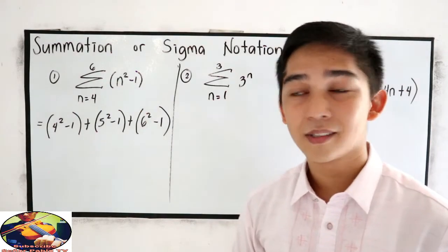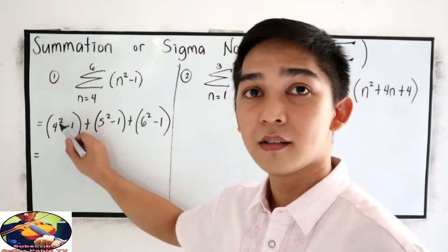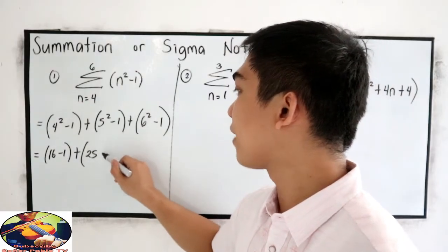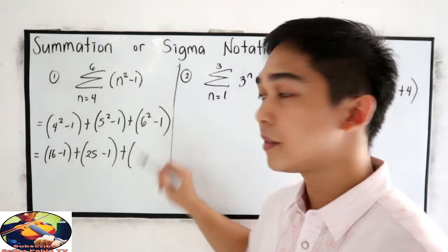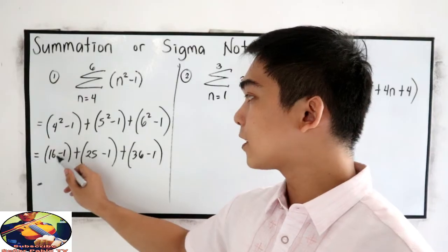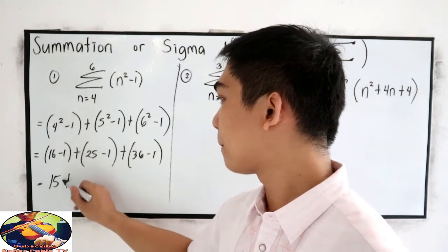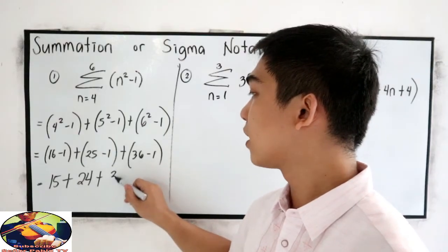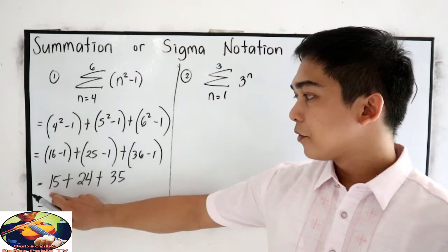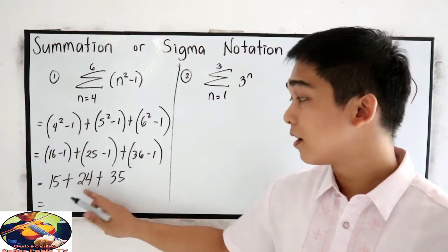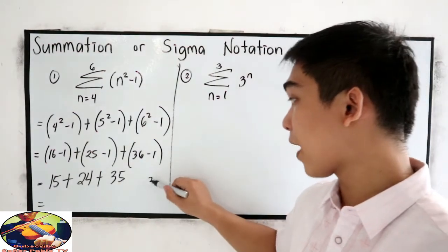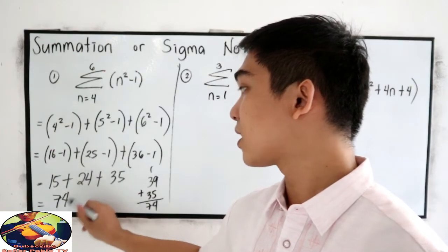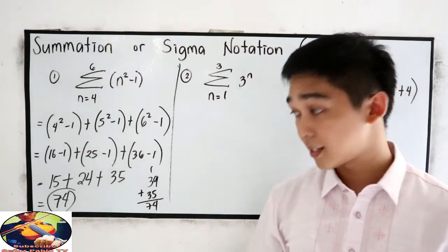Now simplify. 4 squared, that is 16 minus 1, plus 5 squared, 25 minus 1, plus 6 squared, 36 minus 1, which is 35. 15 plus 24 is 39, plus 35, so the sum of this sigma notation is 74.